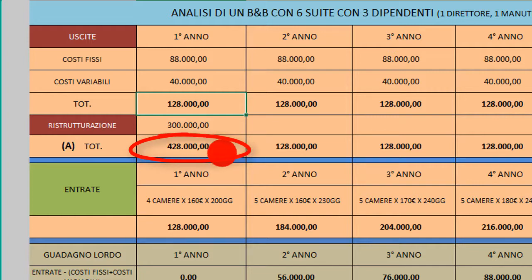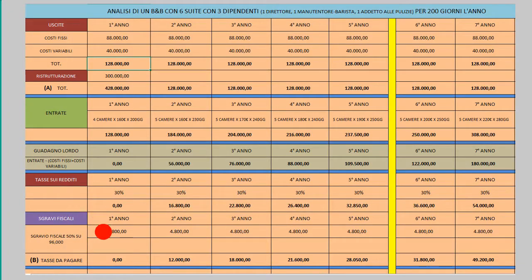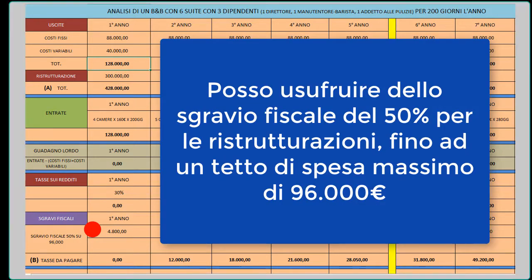Non ho messo in conto eventuali finanziamenti regionali a fondo perduto. Ho invece calcolato uno sgravio fiscale per le detrazioni sulle ristrutturazioni, applicabile però solo su un tetto di spesa di 96.000 euro: il 50% di 96.000 euro è 48.000 euro, spalmati in 10 anni, cioè 4.800 euro all'anno. Rispetto al totale è una cifra piccola, ma comunque utile.